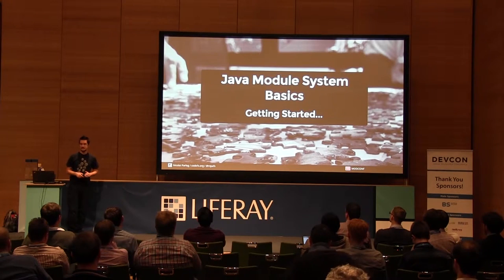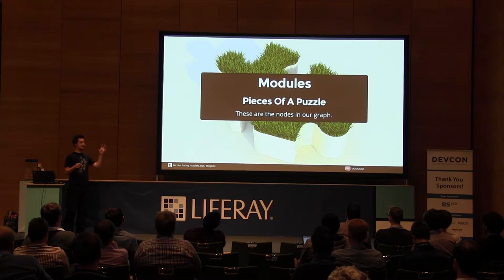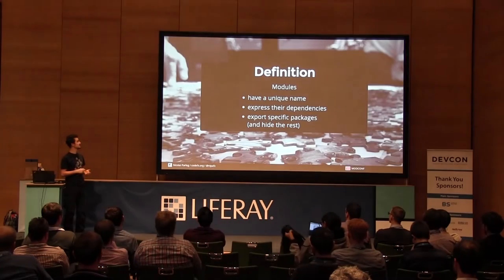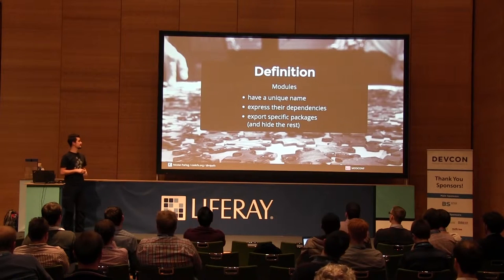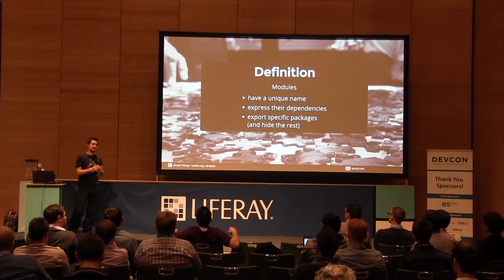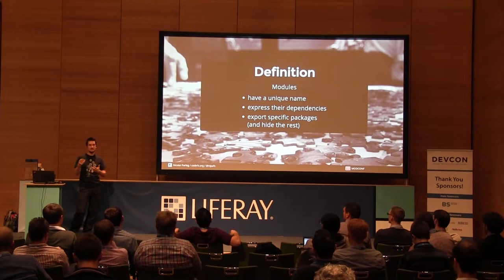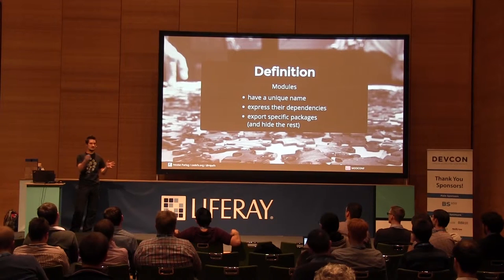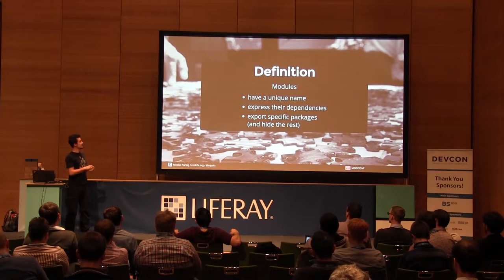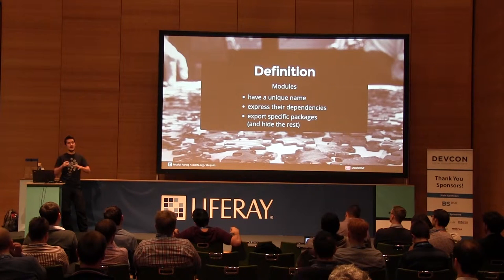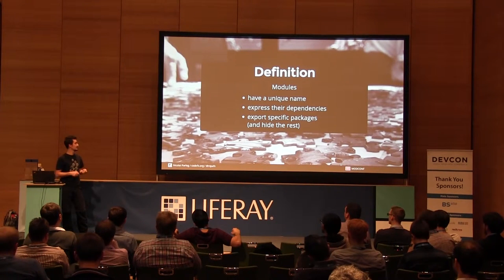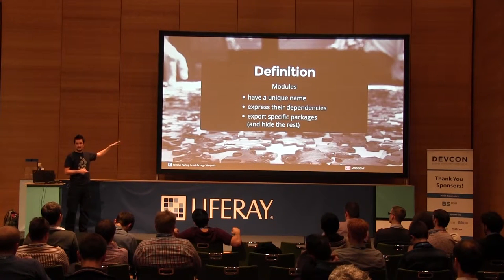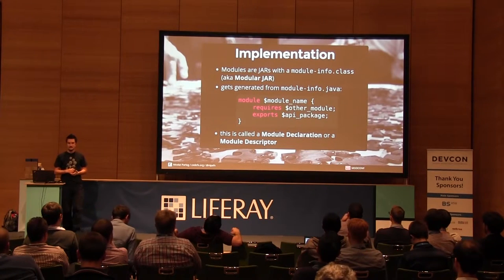Let's start with Java module system basics, how to get started. In our graph that we had in mind earlier, we have JARs as nodes. Now JARs turn into modules. A module is supposed to have a unique name — globally unique, much like packages do. It makes sense to use the inverse URL naming scheme. Then modules express dependencies by naming which other modules they require. And by default — and this is an interesting decision — everything inside a module will be hidden except the packages that are explicitly exported. If you're using OSGi, all of this must seem very familiar.